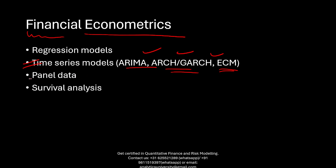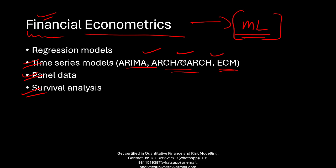You'll also need some understanding of panel data and survival analysis. Financial econometrics is a very important topic — in a master's in quantitative finance or financial engineering, it is typically a full module where you learn theory and apply models with real-world data. It is related to machine learning, but the way you build machine learning models is quite different from financial econometrics, although there are overlaps — regression models, for example, are also part of machine learning.